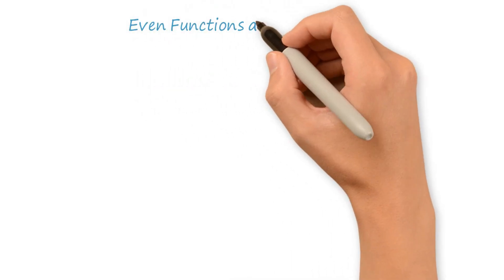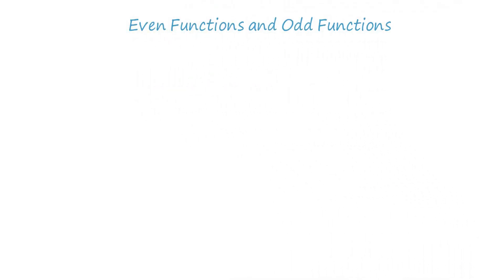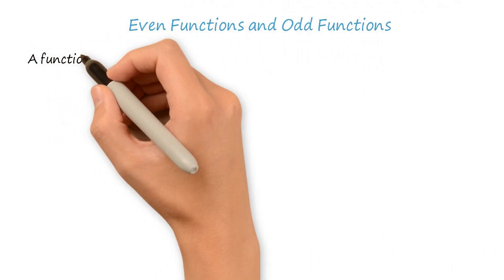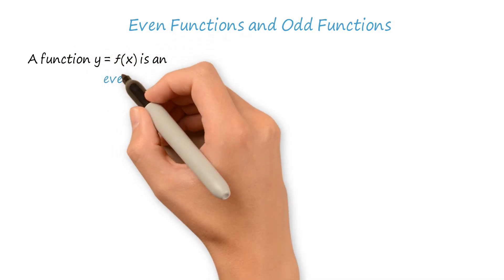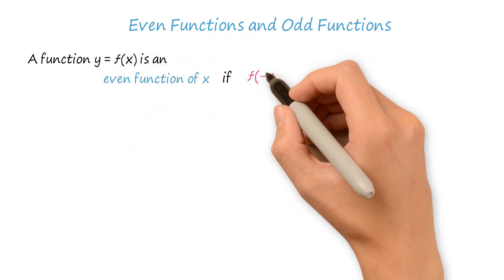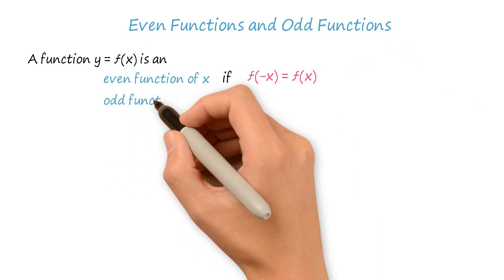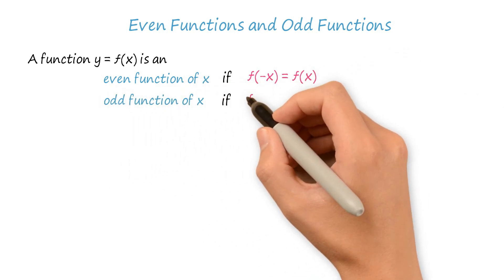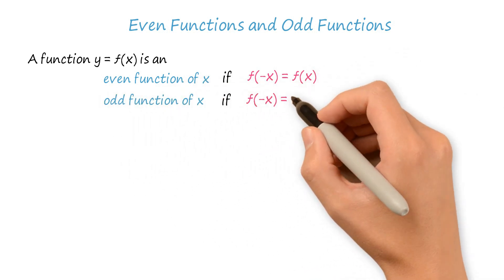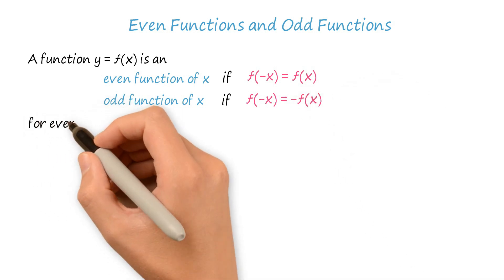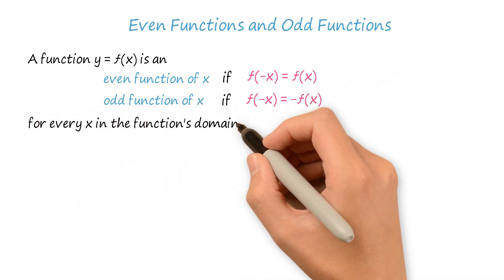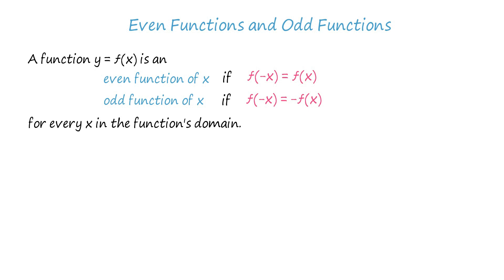Even functions and odd functions. A function y equals f of x is an even function of x if f of negative x equals f of x. Or it is an odd function of x if f of negative x equals negative of f of x, for every x in the function's domain. If the function doesn't satisfy either of the above properties, then it is neither an even function nor an odd function.